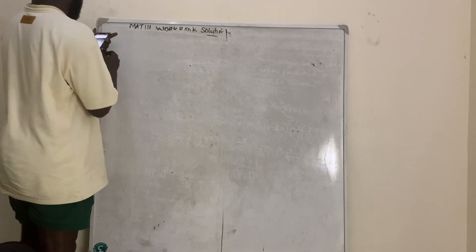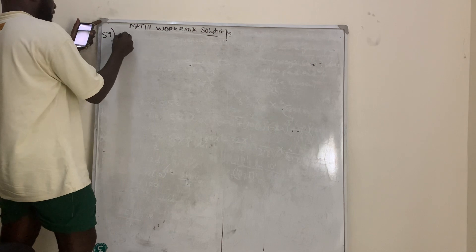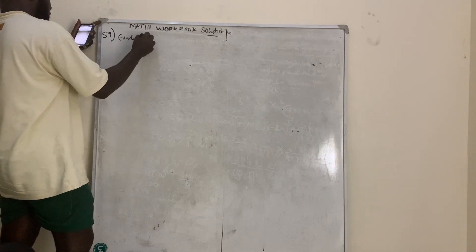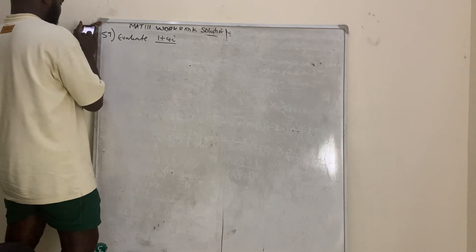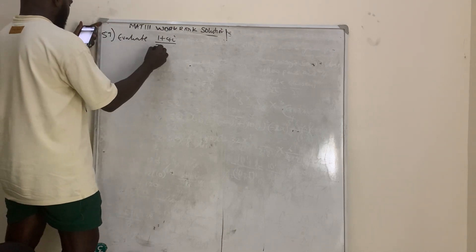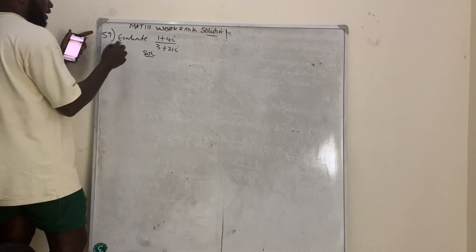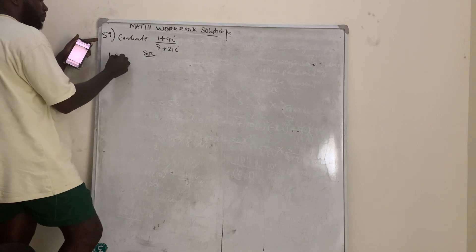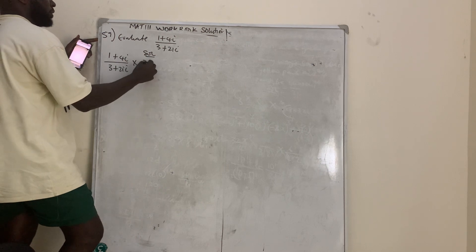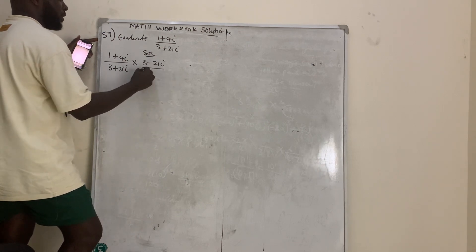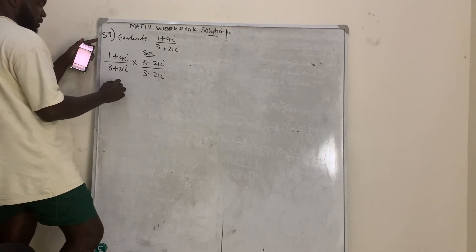Question 59: evaluate (1 + 4i) all over (3 + 21i). The solution is rationalization of a complex number: multiply (1 + 4i)/(3 + 21i) by (3 − 21i)/(3 − 21i).